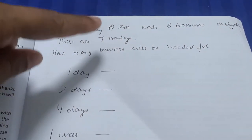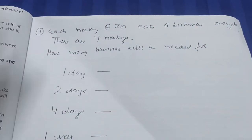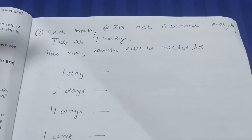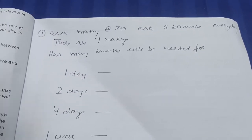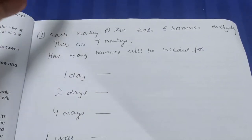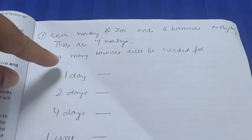Each monkey at the zoo eats six bananas every day and there are seven monkeys, so basically 42 bananas every day. My girl doesn't know tables but she does multiple addition. Then, how many bananas will be needed for one day, two days, four days?